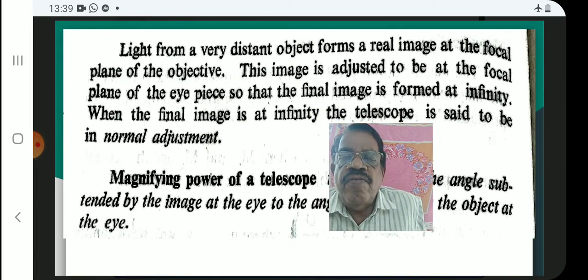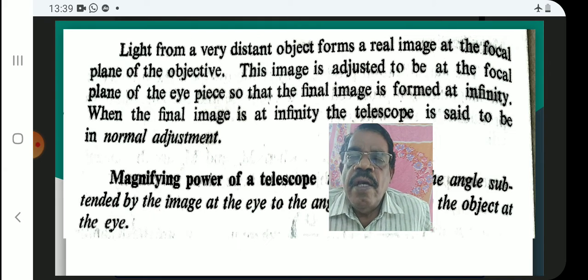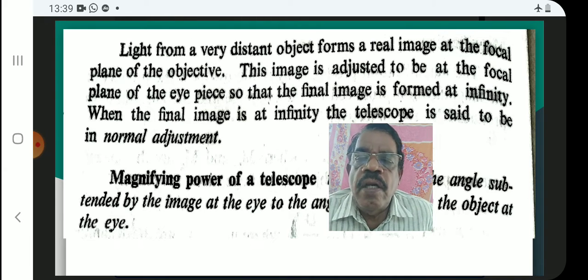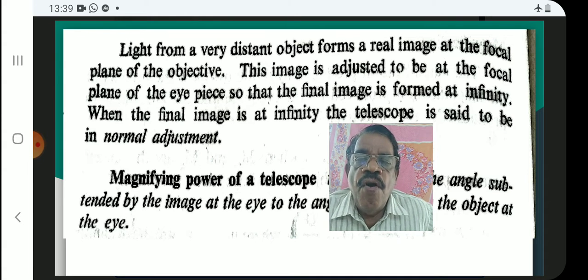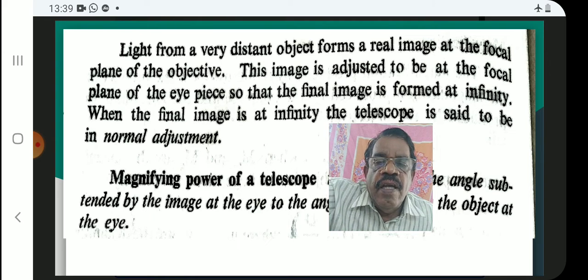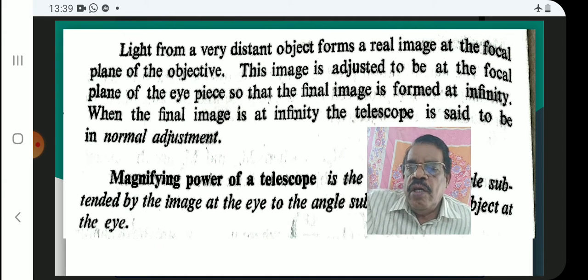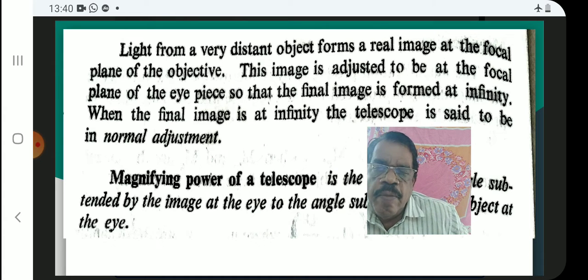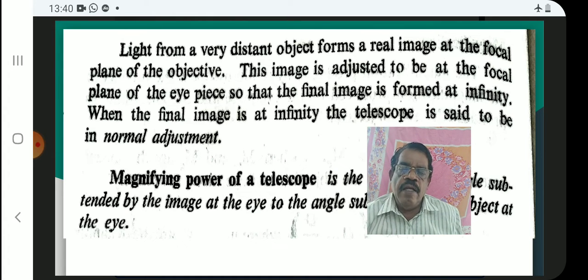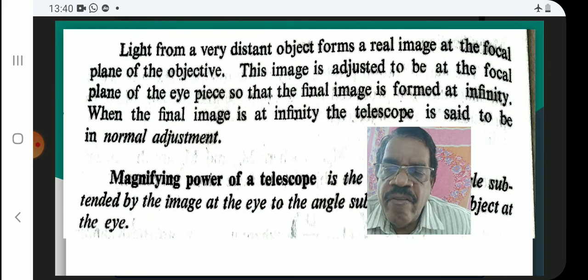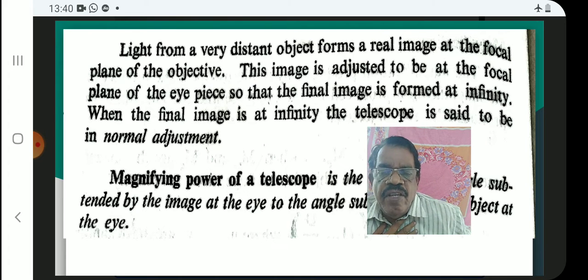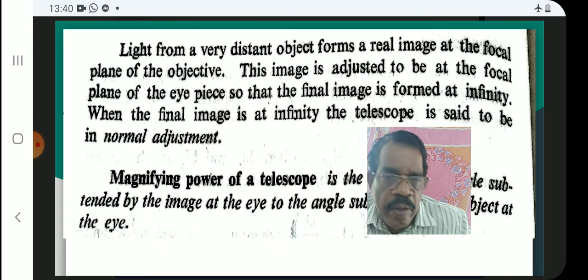Light from a very distant object forms a real image at the focal plane of the objective. The image is adjusted to be at the focal plane of the eyepiece so that the final image is formed at infinity. When the final image is at infinity, the telescope is said to be in normal adjustment.